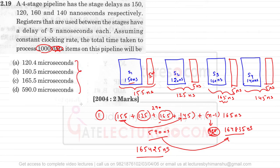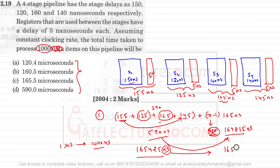The answers are given in microseconds but our result is in nanoseconds. Since 1 microsecond = 1000 nanoseconds, we divide: 165,425 ÷ 1000 = 165.425 microseconds, which is approximately 165.5 microseconds. The answer is option C — it is the closest value, so the answer for this question is option C.